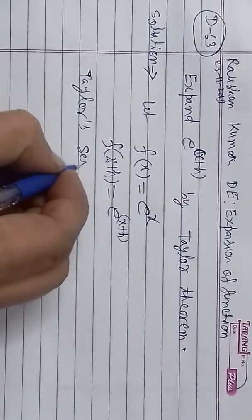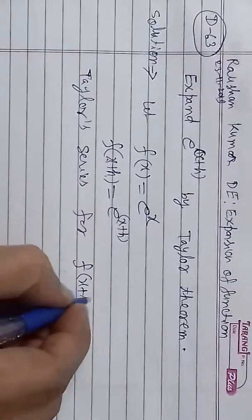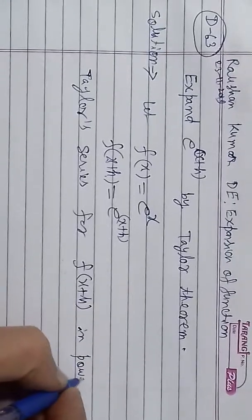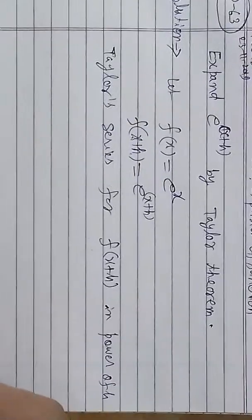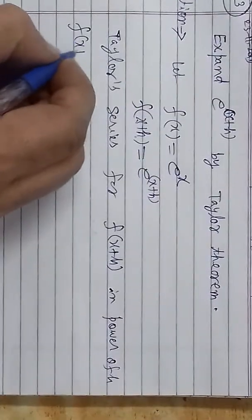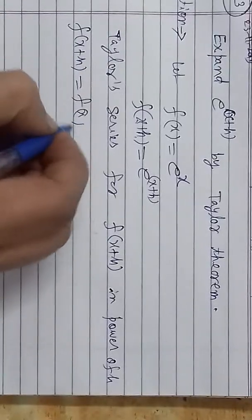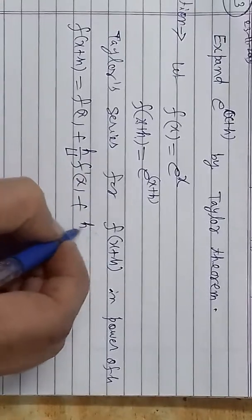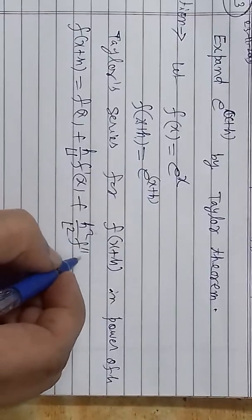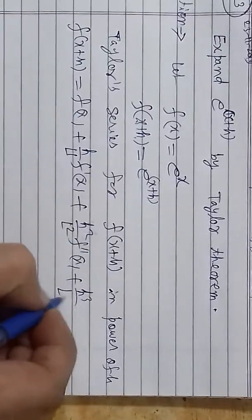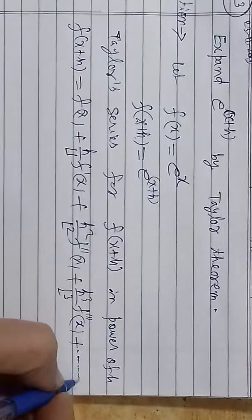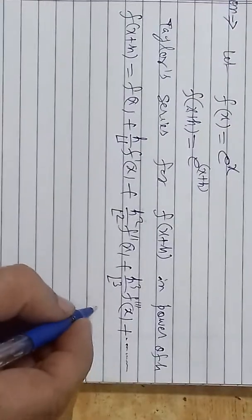Hum log jaante hain ki Taylor series kisi bhi function f(x+h) ke liye h ki powers mein expand hoti hai. Iska formula hai: f(x+h) = f(x) + h/1! · f'(x) + h²/2! · f''(x) + h³/3! · f'''(x) + and so on. Is formula mein values put karni hain.